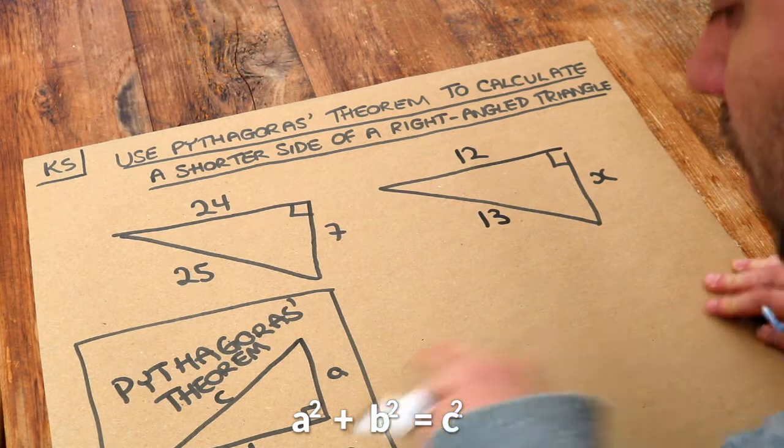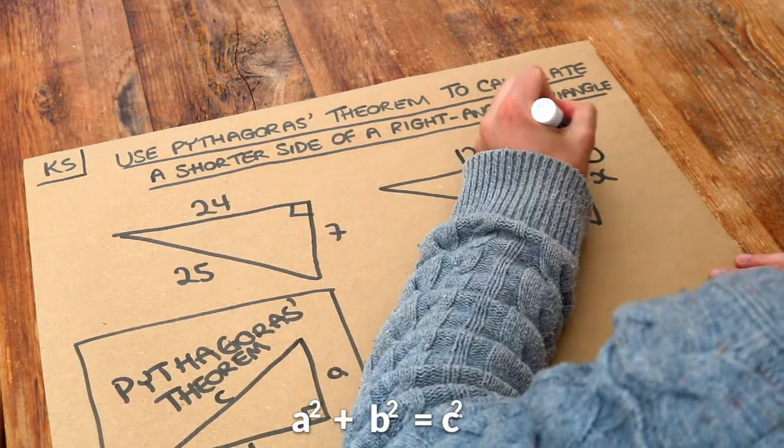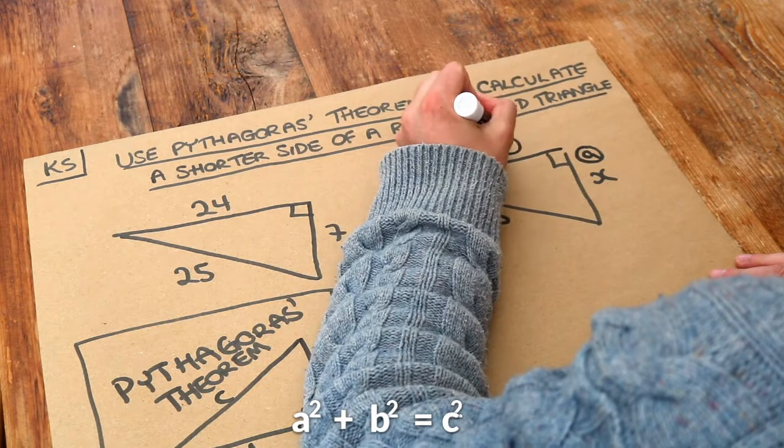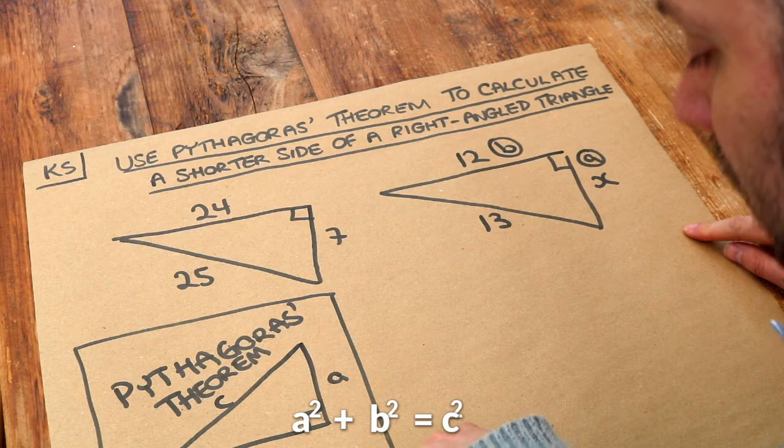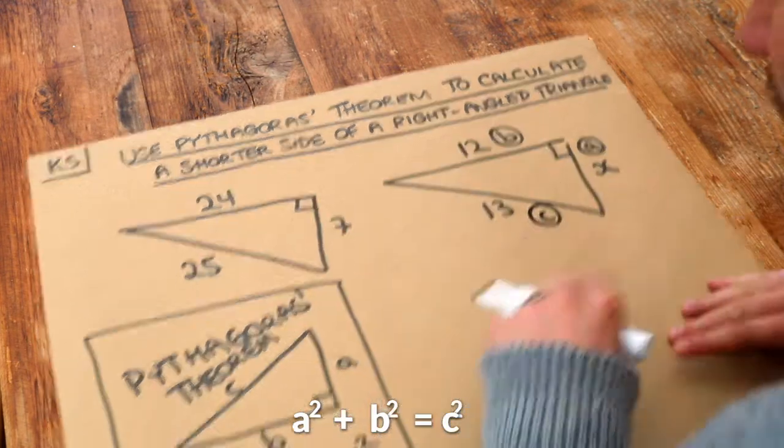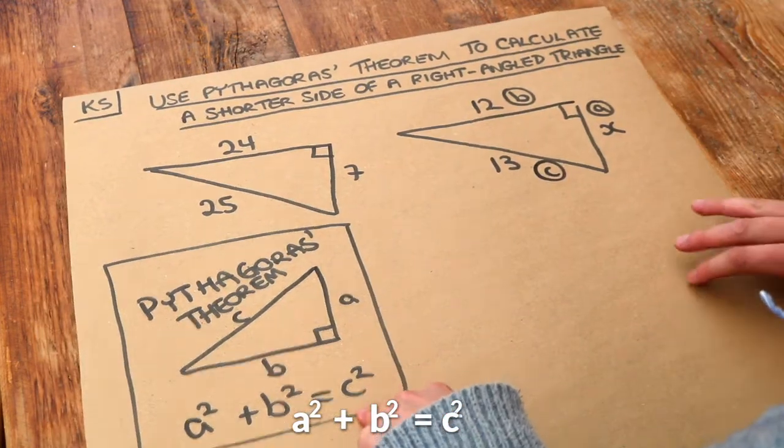Now let's label our shorter sides A and B. We can make the X, A for example, and the 12, B, but I could have labeled the A and B the other way around, doesn't matter. The longest side is always the C. The hypotenuse is always the C, the variable that's on its own on one side of this equation.